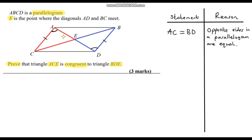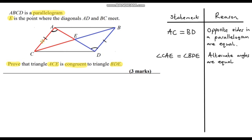How do I know that? These are called alternate angles, and alternate angles are equal. So our statement is angle CAE equals angle BDE, and our reason is because alternate angles are equal. We can apply the same logic to the angle up here — these two angles are also alternate angles and therefore must also be equal.